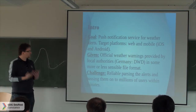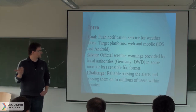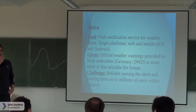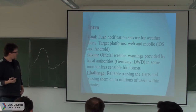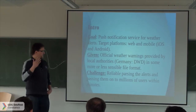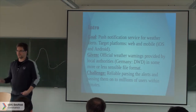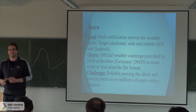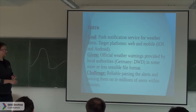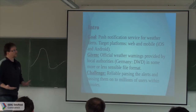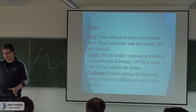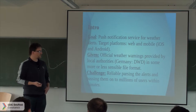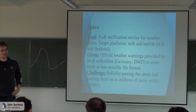What we actually have to use is official weather warnings from the local authorities. For Germany, that's the Deutsche Wetterdienst, the DWD. One of the main problems is that all this information from local authorities comes in more or less sensible formats — most of the time it's less sensible, so it's really hard to parse correctly. Dealing with cancellations is a big issue. Some authorities always send the complete state for all regions at a specific point in time; others only provide information if something changes.